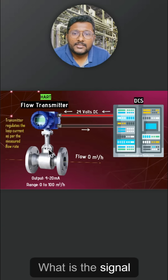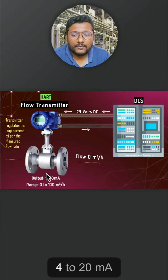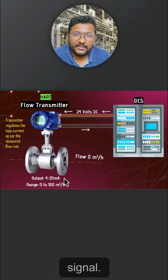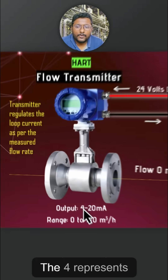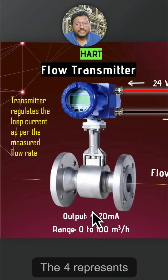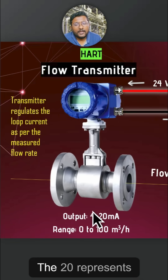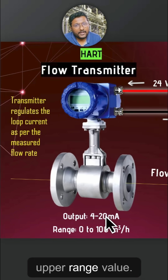The signal range is 4 to 20 mA. The 4 mA represents the lower range value and the 20 mA represents the upper range value.